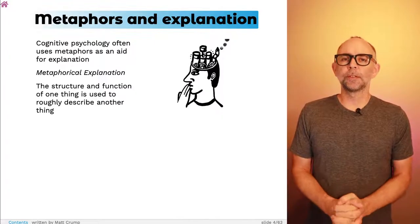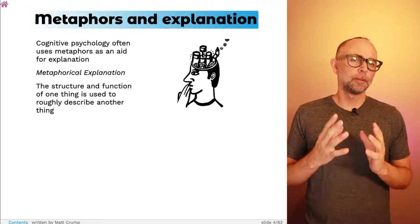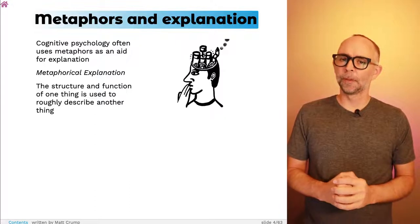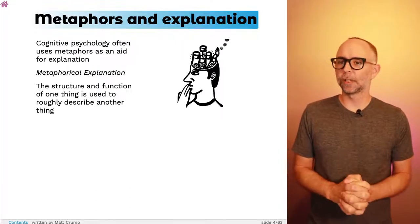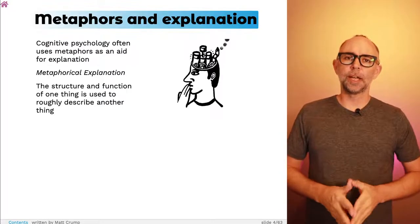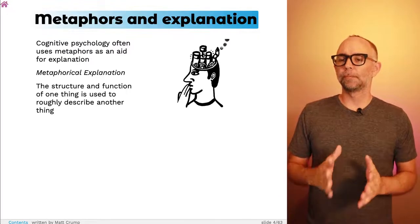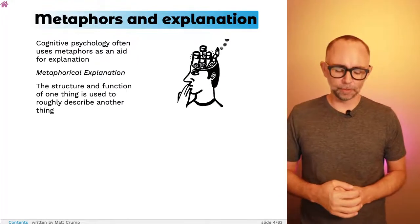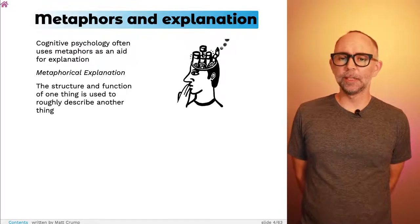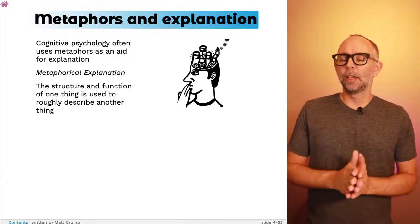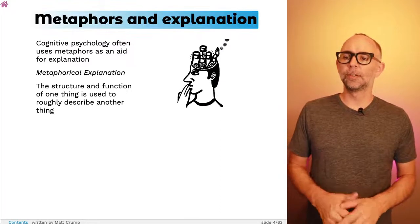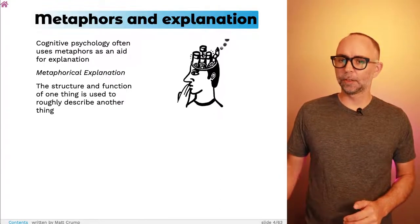One of the goals of this course is to introduce you to explanations about cognitive processing and cognitive phenomena. If we take a look at explanations in cognitive psychology, we'll often see metaphors being used as aids for explanation — what I'll call metaphorical explanation. In a metaphor, we use the structure and function of one thing to roughly describe another thing.